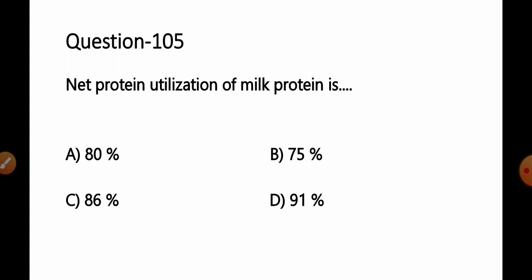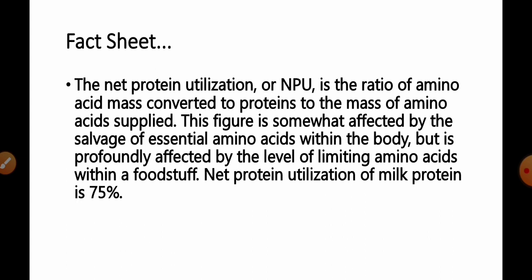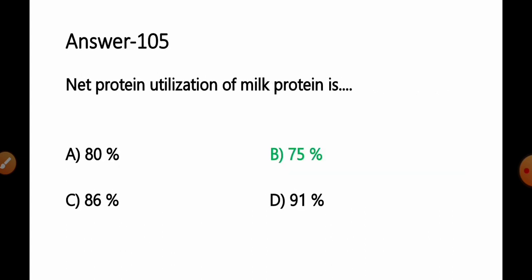Fact available for this question: Net protein utilization or NPU is the ratio of amino acid mass converted to protein to the mass of amino acid supplied. This figure is somewhat affected by the salvage of essential amino acids within the body but is profoundly affected by the level of limiting amino acids within a foodstuff. Net protein utilization of milk protein is about 75%. So we can say option B. 75% will be the correct answer for this question.